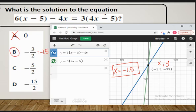If we change C to a decimal, we get negative 2.5. So that one's not correct. D, we get negative 7.5. So that's not our answer. So super simple using Desmos.